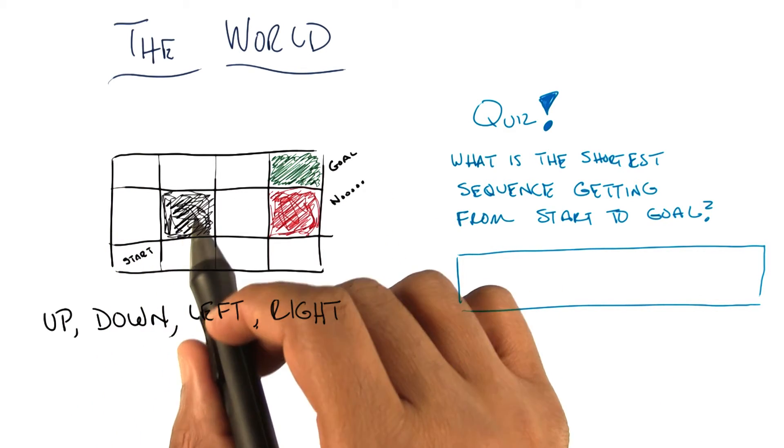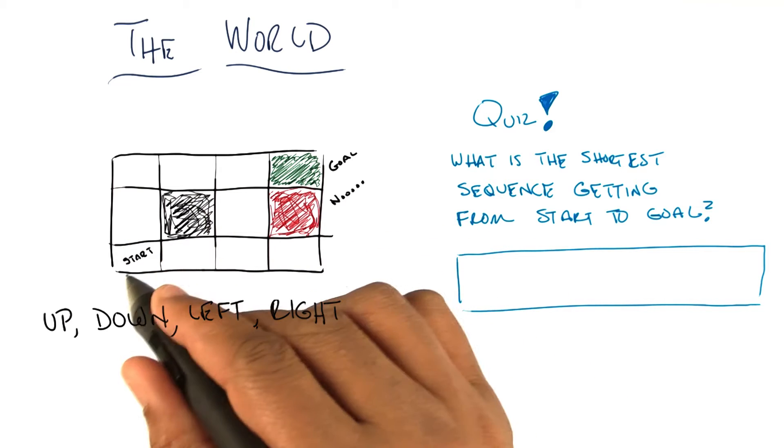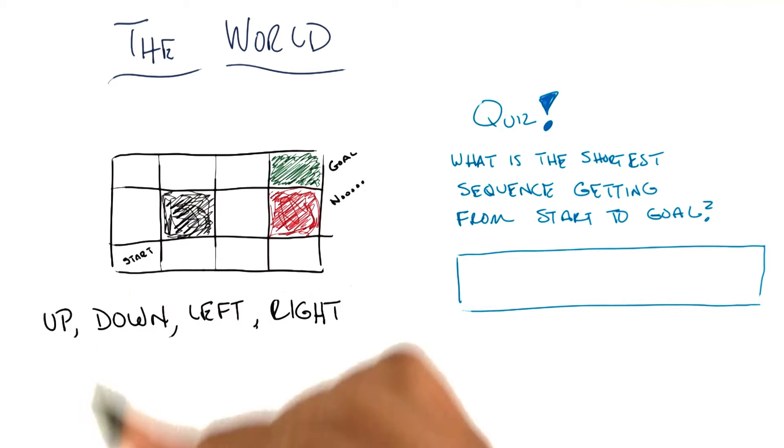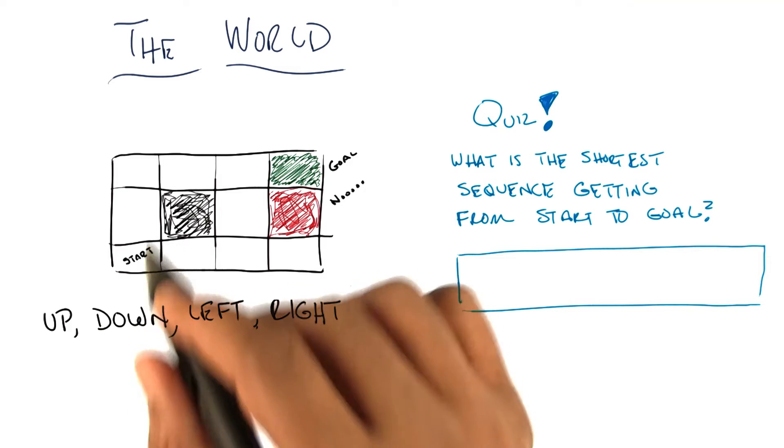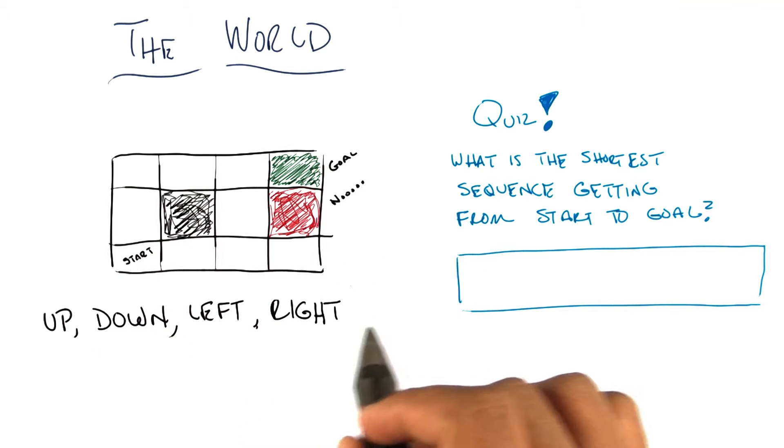For the purposes of this discussion, we can think of the world as being a kind of game where you start out in a state, which we're going to call the start state. And you're able to execute actions, one of these four: up, down, left, or right.